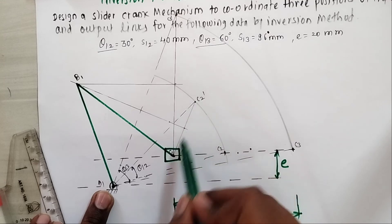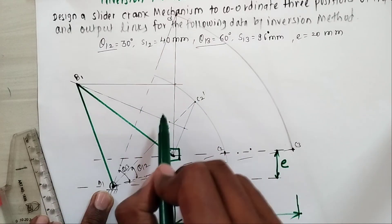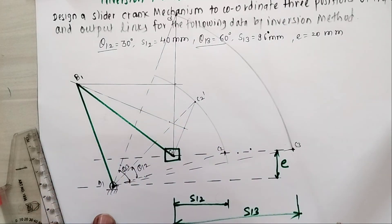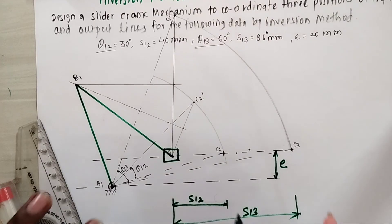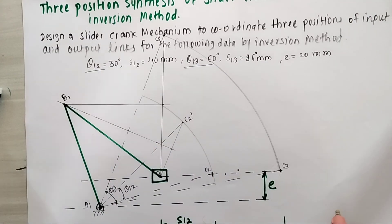Draw perpendicular bisectors of C1C2 dash and C1C3 dash. Their intersection gives us B1. So we get A1B1 and B1C1. Likewise we find out crank length and coupler length. This is the procedure for solving a three position synthesis problem of slider mechanism by using inversion method.